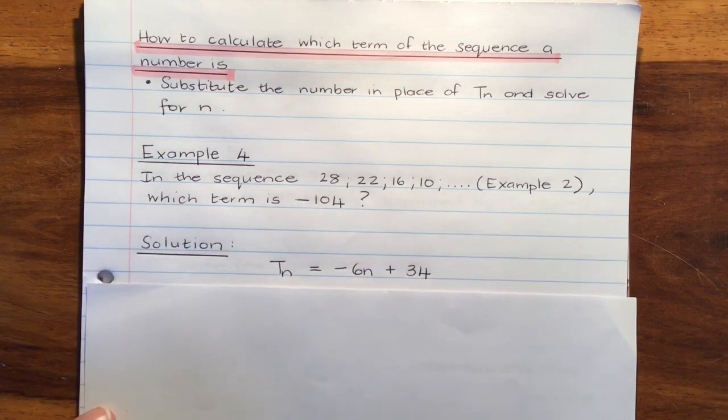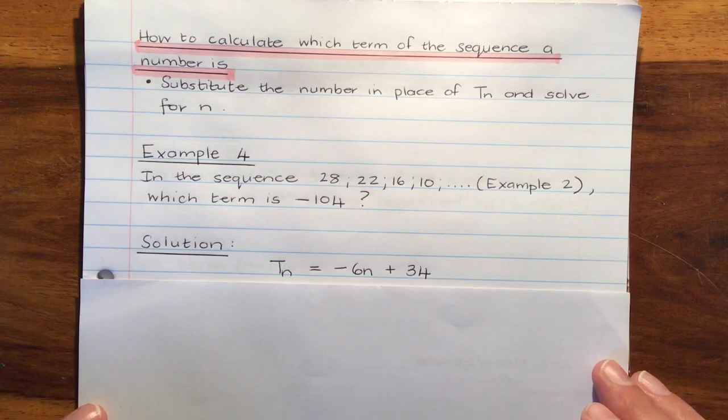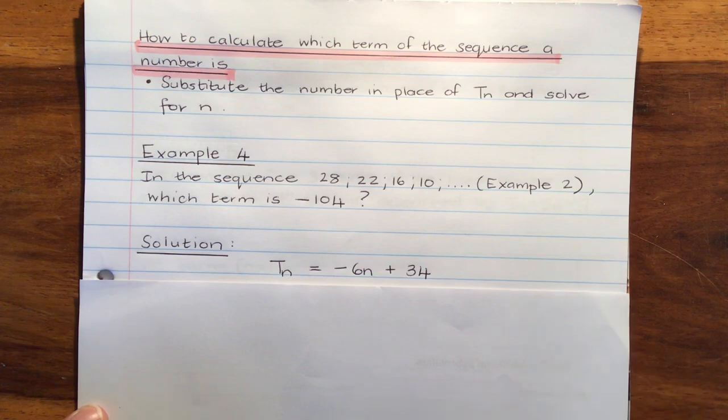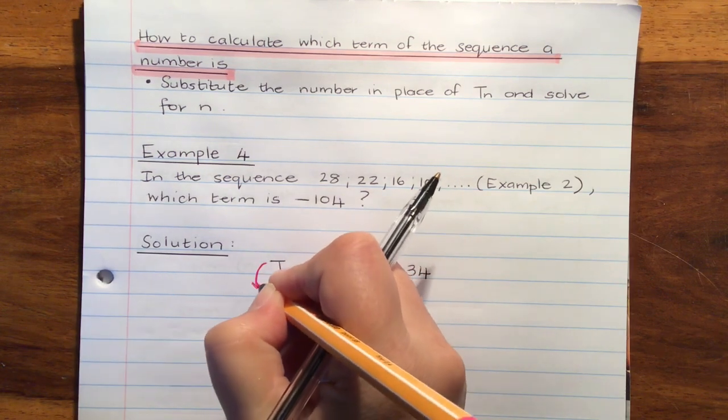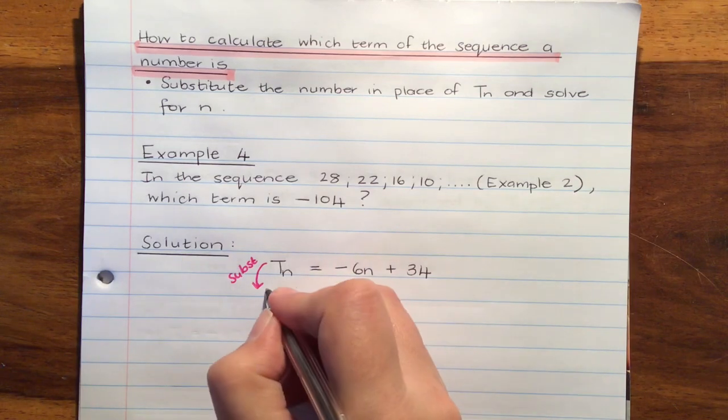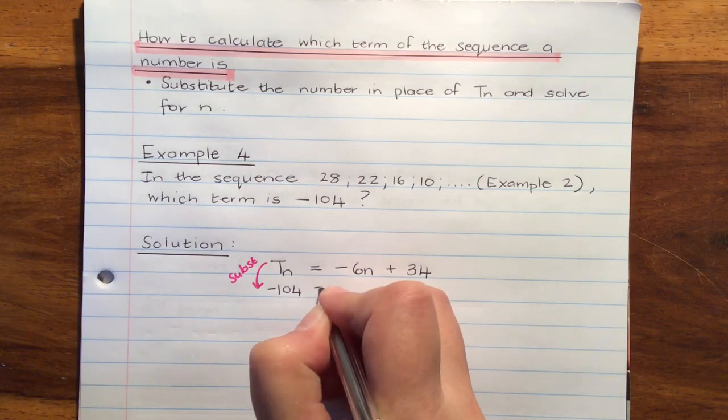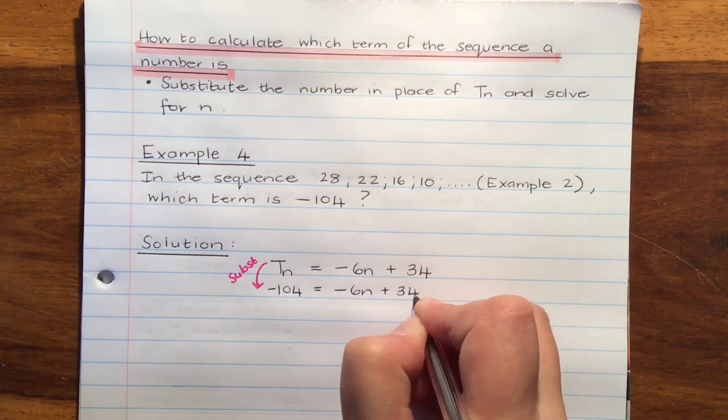Remember, in example 2, we worked out the general formula is Tn equals negative 6n plus 34. So now we're going to substitute into the formula on this side. And for Tn, we're going to substitute in our value of negative 104.